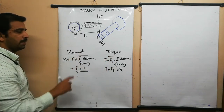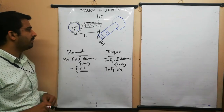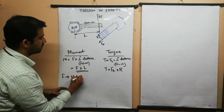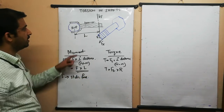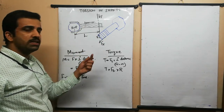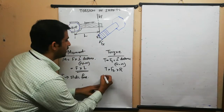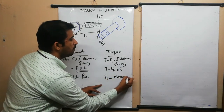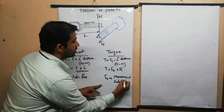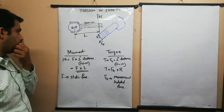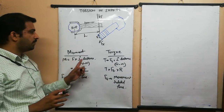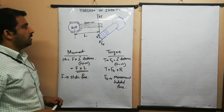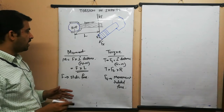One more difference: the force used for moment is a static force, whereas the tangential force used for torque is a movement-related force. So FT (tangential force) is a movement-related force. This is the basic difference between moment and torque.